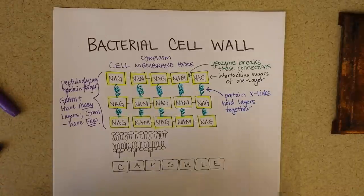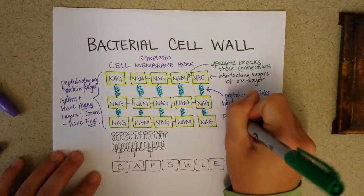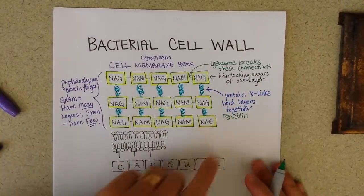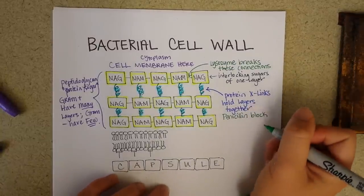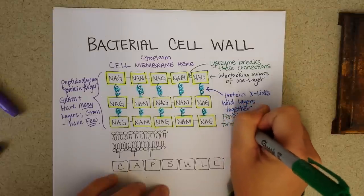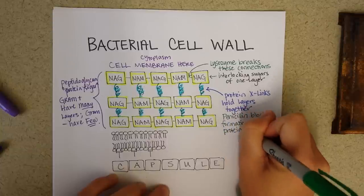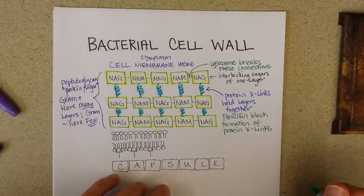And then keeping use of your green pen, penicillin and many other antibiotics that act in a similar manner, block the formation of the protein crosslinks. And that's going to stop the bacteria from being able to grow very effectively.